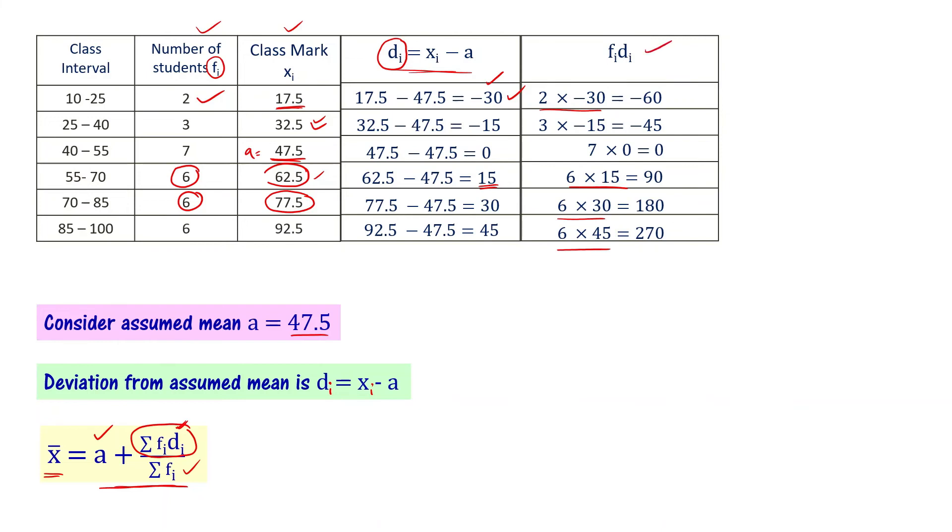Let's find Σfidi. Σfidi is 435. That's -60 + (-45) + 0 + 90 + 180 + 270. Now x̄ = a + Σfidi / Σfi = 47.5 + 435/30. This simplifies to 47.5 + 14.5 = 62. By the direct method, it's also equal to 62. We don't have any difference.